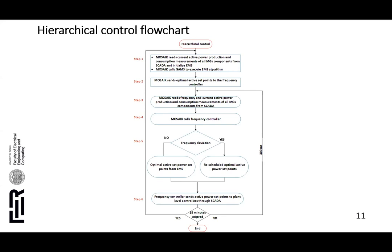In step three, Mosaic reads frequency and current active power measurements of all microgrid components from SCADA and forwards those measurements to the frequency controller. In step four, Mosaic calls the frequency controller to execute. If frequency measurement doesn't deviate from nominal, the frequency controller sends the optimal set points through SCADA to local plant-level controllers. In the case of frequency deviations, the frequency controller sends rescheduled optimal active power set points to provide primary reserve. Steps three to six are cyclically executed every 300 milliseconds.